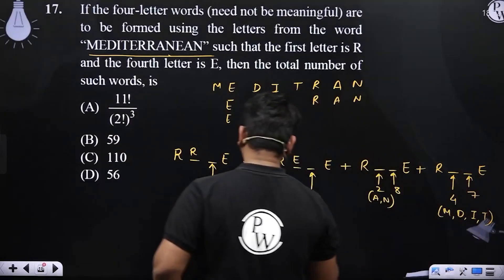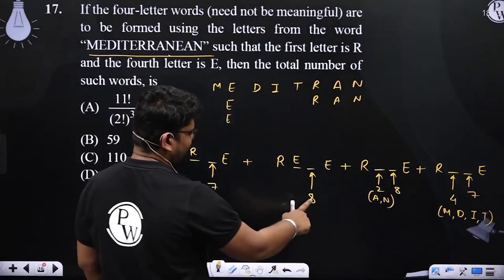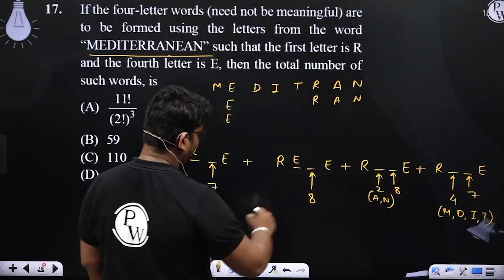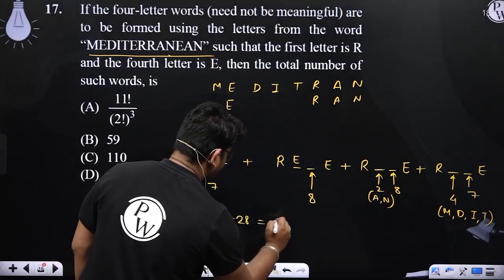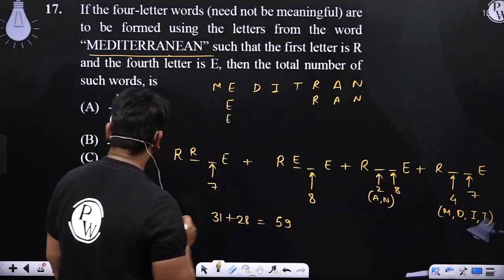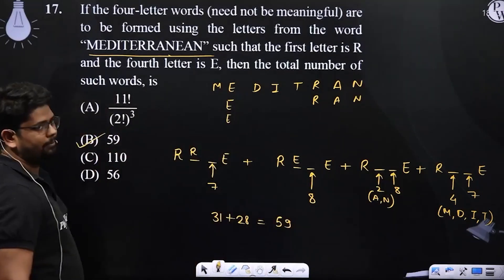Add them all. This is 7 plus 8 plus 16, 24 plus 1 is 31, plus the last is 28. This is 59. 59 is option B. Clear?